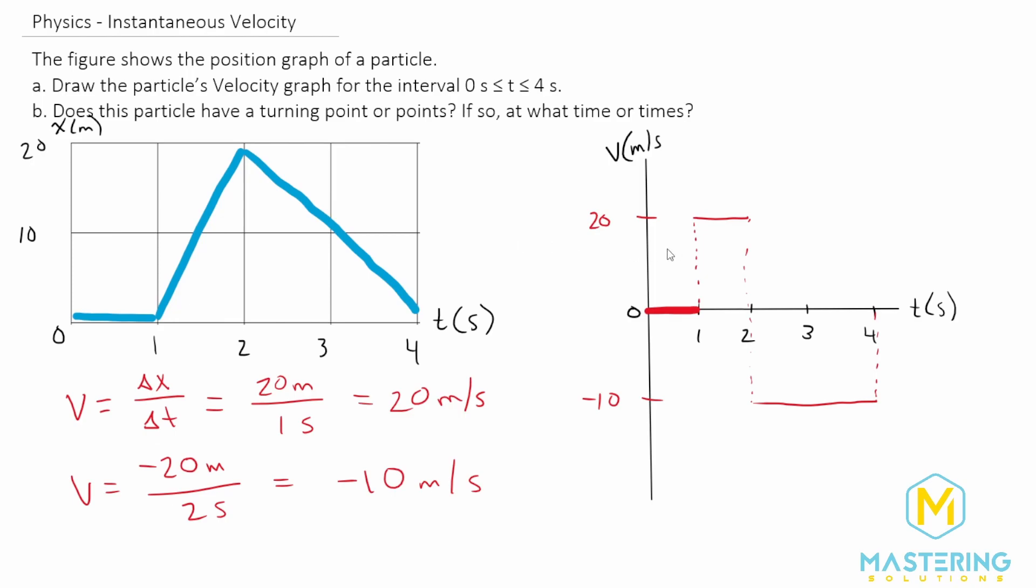All right, so here is our velocity graph from the position versus time graph. And the question for part B is, is there a turning point at any point on this graph here? And the answer is yes, because we're going from zero meters, so we're not moving, and then we're going forward. So it hasn't necessarily turned around. But when we go from a positive velocity to a negative velocity, that means we're going in the positive x direction and now all of a sudden switching and going in the negative x direction. So here at two seconds, or t equals two, t equals two seconds, there is a turning point.